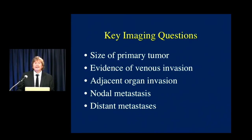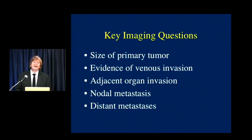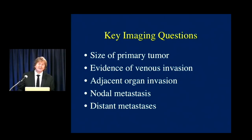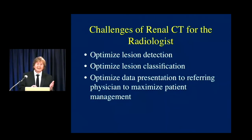When we read a CT scan, we're trying to answer key questions: What's the size of the primary tumor? Is there vascular invasion, particularly venous invasion? Is there adjacent organ invasion? Are there nodes involved? Are there distal metastases — lung, liver, or bone? There are many things we look at, but let's step back and talk about the challenges we face.